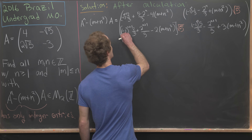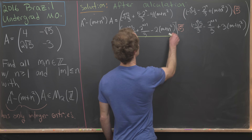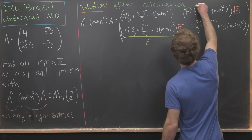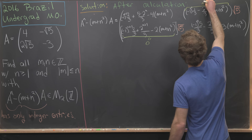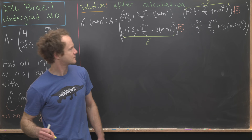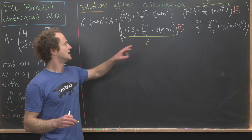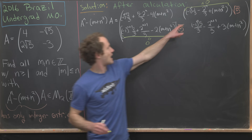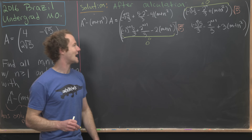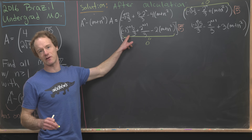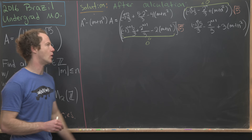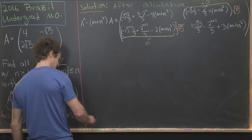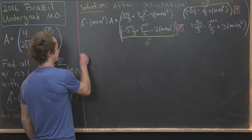Setting the off-diagonal entries to zero, we notice the two off-diagonal conditions are multiples of each other — multiplying one by −2 gives the other — so we effectively have just one equation to solve.